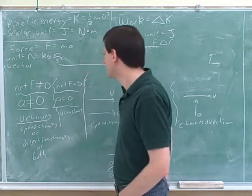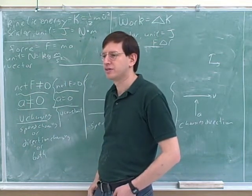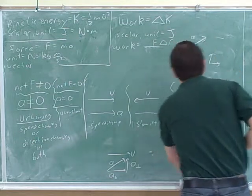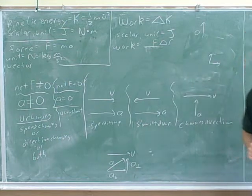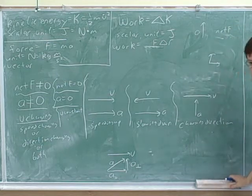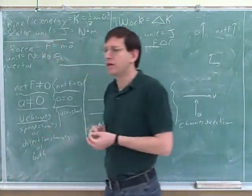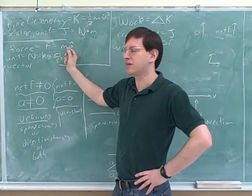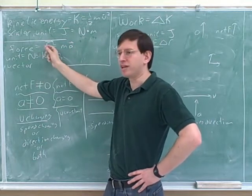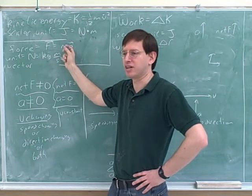The acceleration doesn't tell you how the force is changing — it just tells you if a force exists. So if there's an acceleration, there must be a force. What's the relationship between the direction of the acceleration and the direction of the force? If we write Newton's second law in vector form — force equals mass times acceleration — mass is a positive number, so multiplying a vector by a positive number gives something pointing in the same direction. Therefore, the net force points in the same direction as the acceleration.